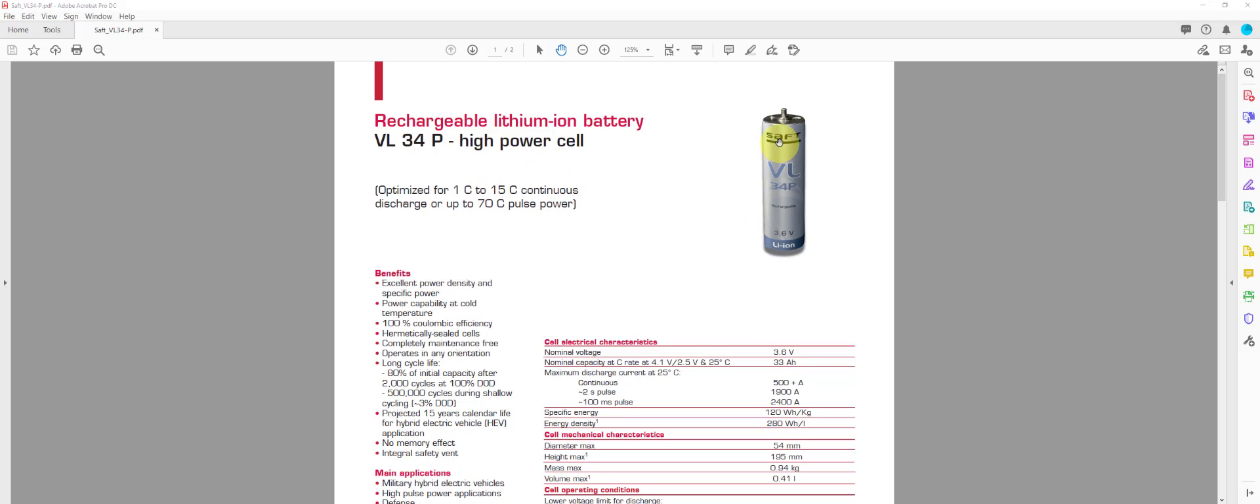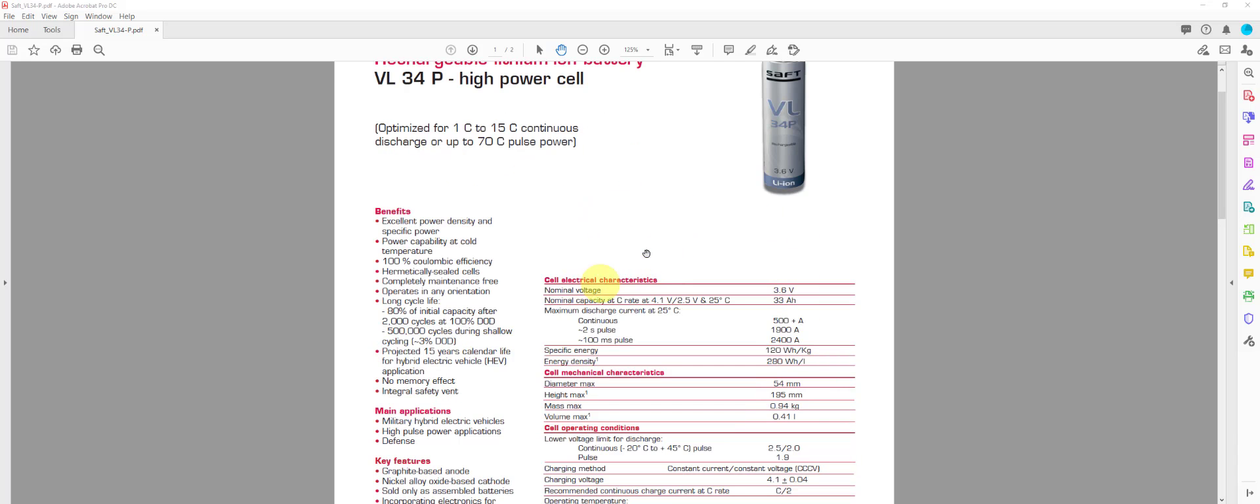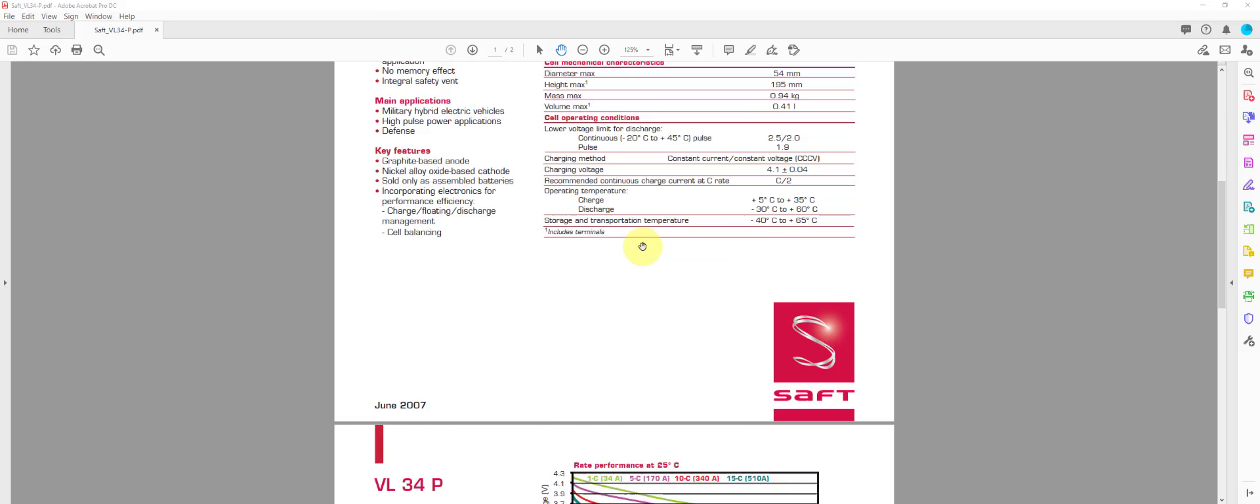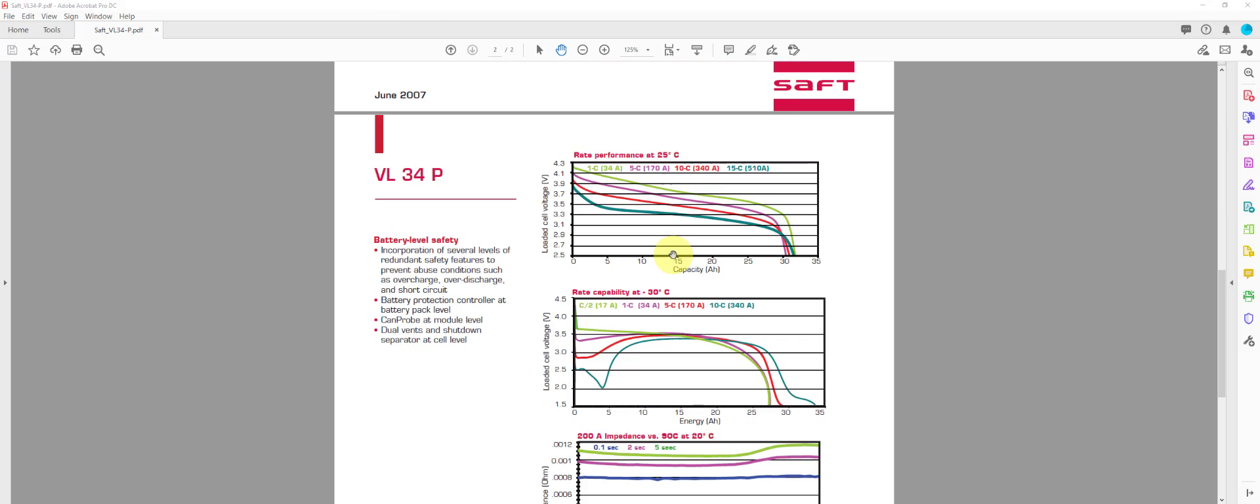I've got open a PDF from SAFT for the VL34P lithium-ion battery cell. This is a high power cell. The data sheet is available online. What we're going to do is scroll down to find the discharge curves. Here's the rated performance at 25 degrees C.